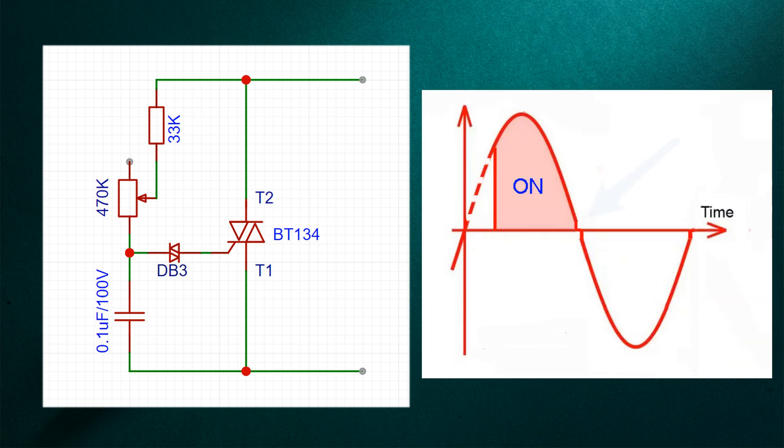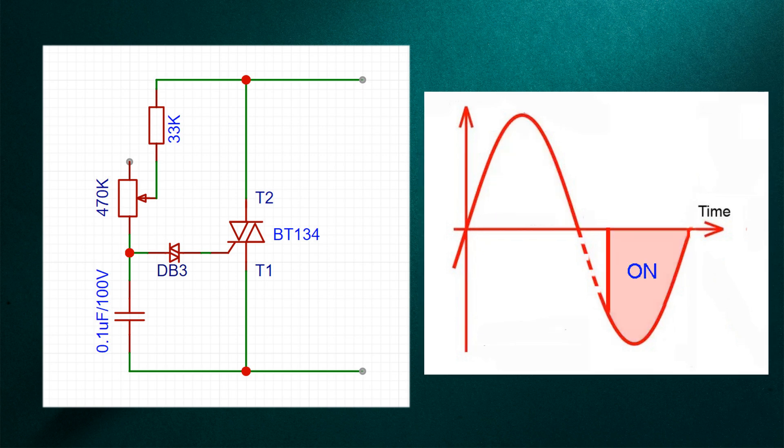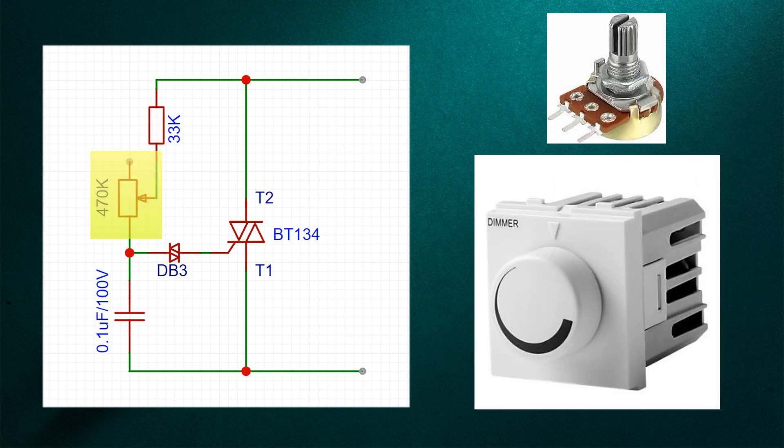The triac keeps conducting until its current drops below a certain limit known as holding current. The same process repeats for the negative half cycle as the components of this circuit function the same in both directions. Varying this resistor value alters the capacitor charging time and consequently the fan speed changes due to the change in the triac's firing angle.